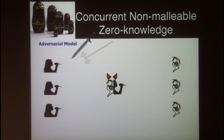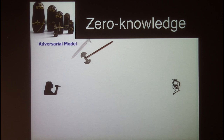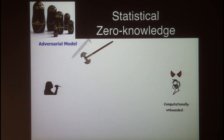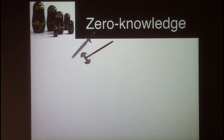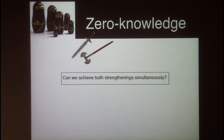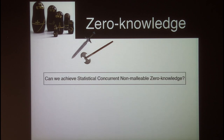Resilience against such attackers is given by non-malleable zero knowledge. A further strengthening is to allow the adversary to interact with not just a single prover and a single verifier, but with multiple provers and verifiers concurrently — this is concurrent non-malleable zero knowledge. Another important direction is to achieve zero knowledge against not just computationally bounded adversarial verifiers, but computationally unbounded ones — statistical zero knowledge. A natural question is: can we achieve both strengthenings simultaneously, that is, statistical concurrent non-malleable zero knowledge?